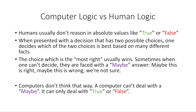A computer doesn't think that way. A computer can't really deal with a maybe at its core, and it can only really deal with a true or false. At the end of the day, the computer has to make a decision, whether something is true or whether something is false, and it can't really think in between, at least not directly. We kind of have to add that on top if we want to do that.